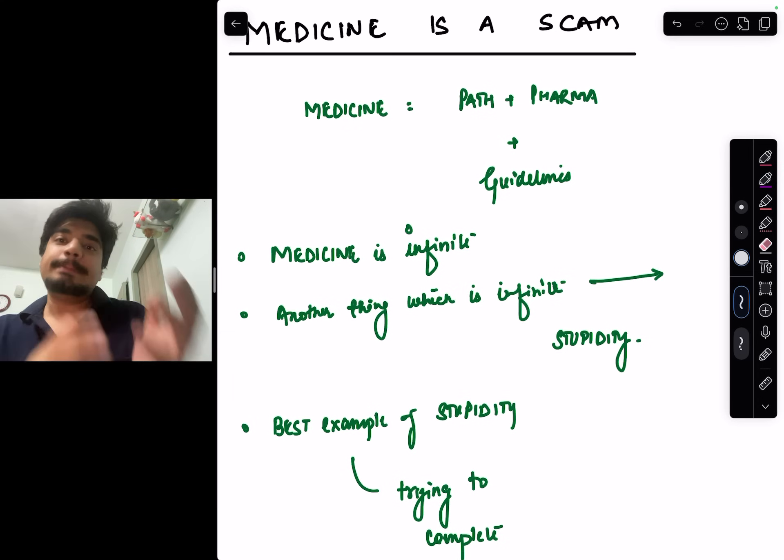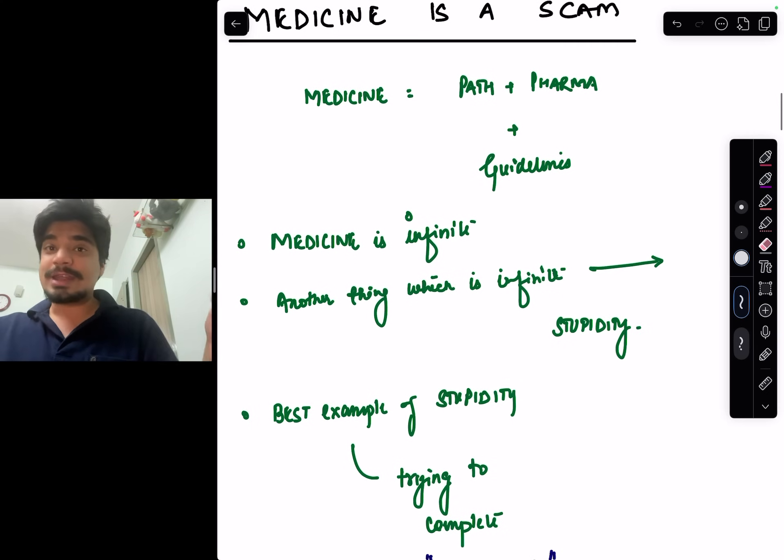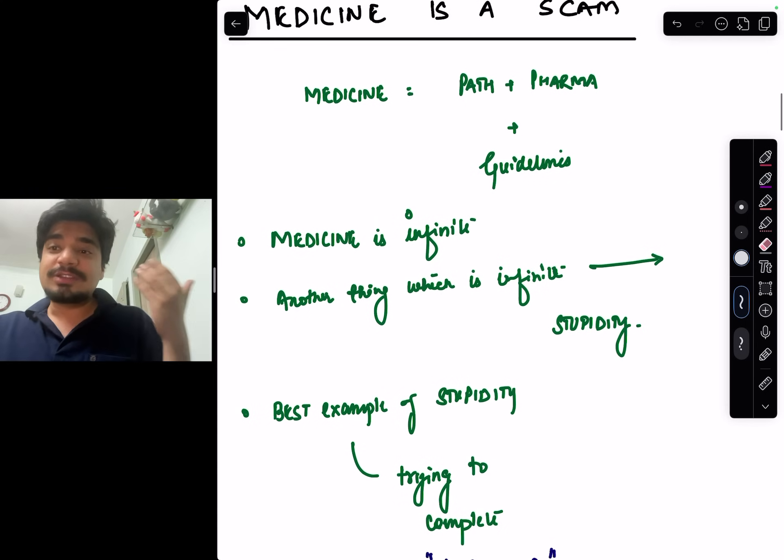It's just an amalgamation of pathology, pharmacology, and treatment guidelines. You have to understand that the only way you can complete medicine is to actively restrict it. Medicine is infinite, human stupidity is infinite, and one example of that human stupidity would be trying to complete medicine.